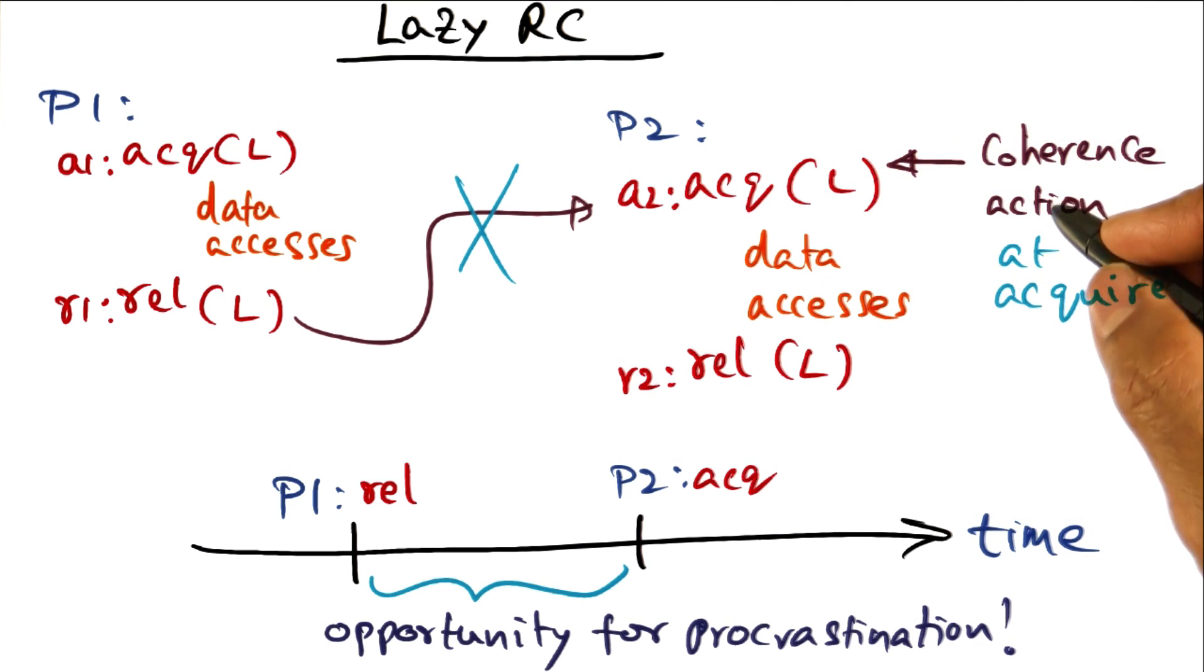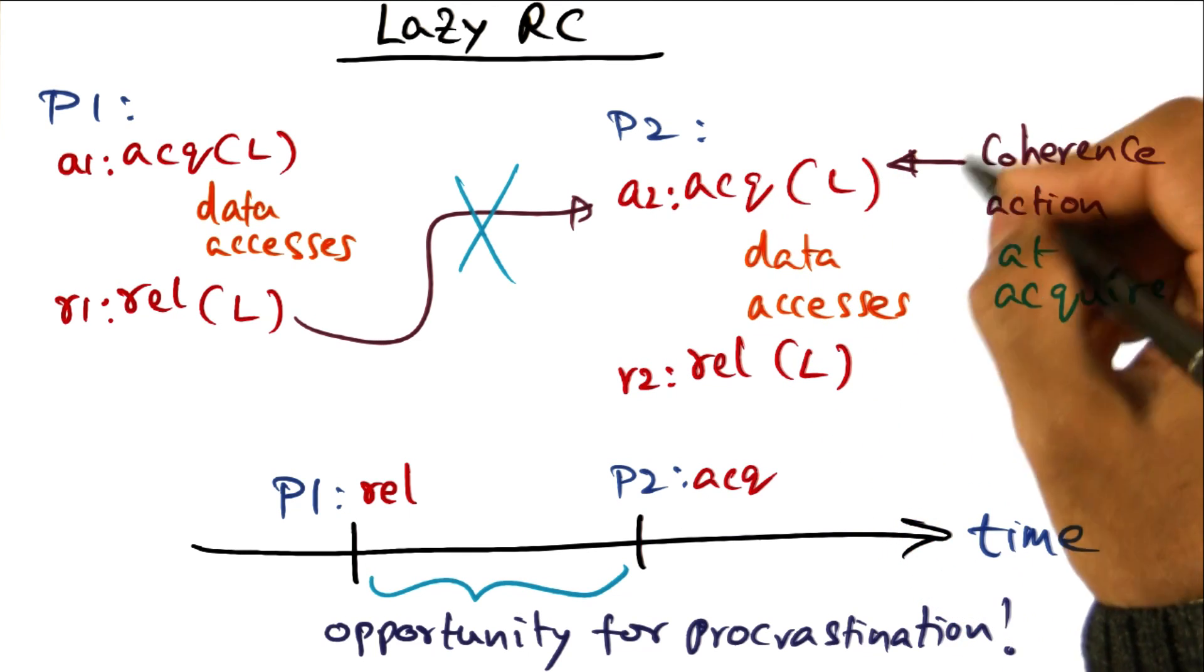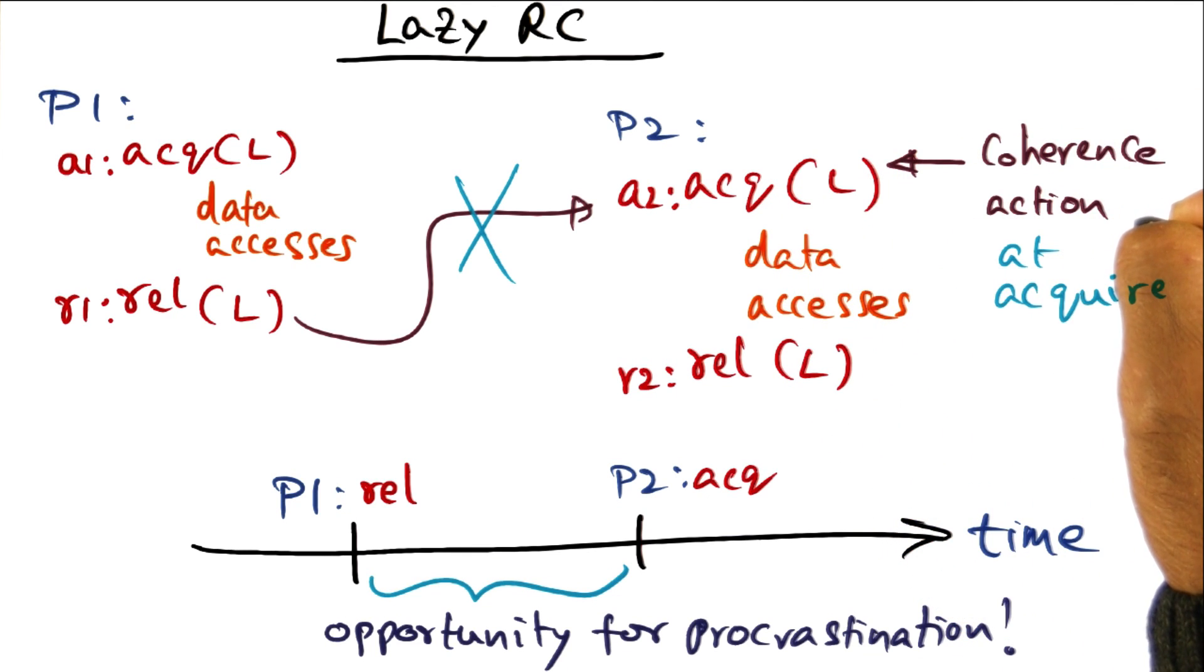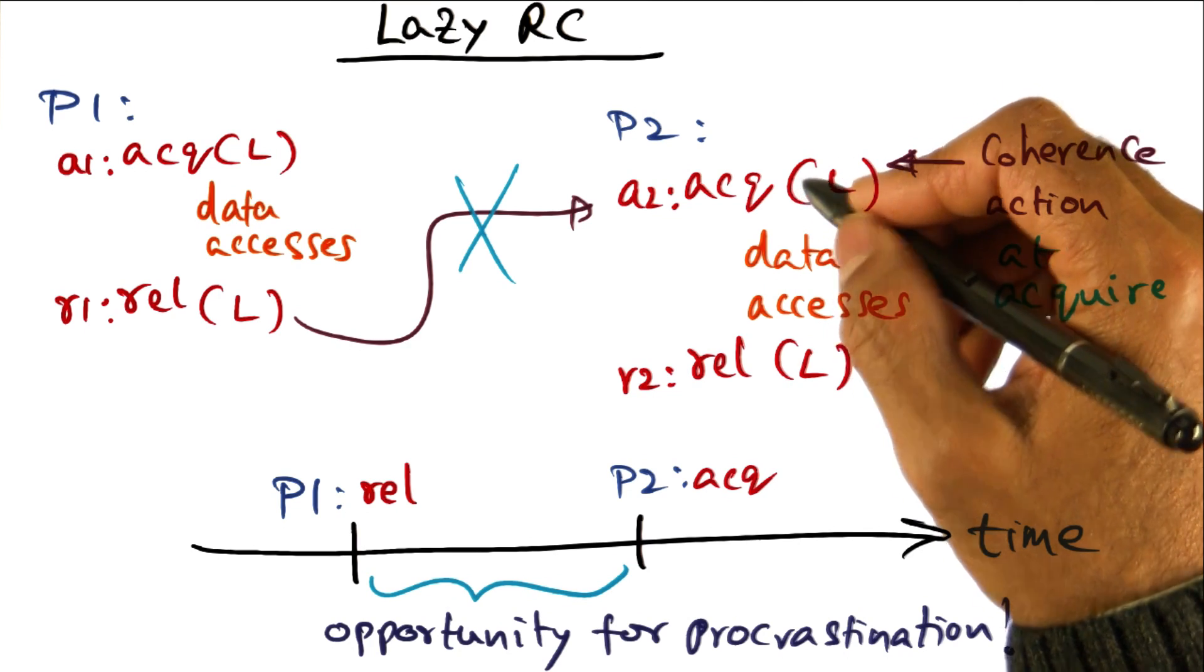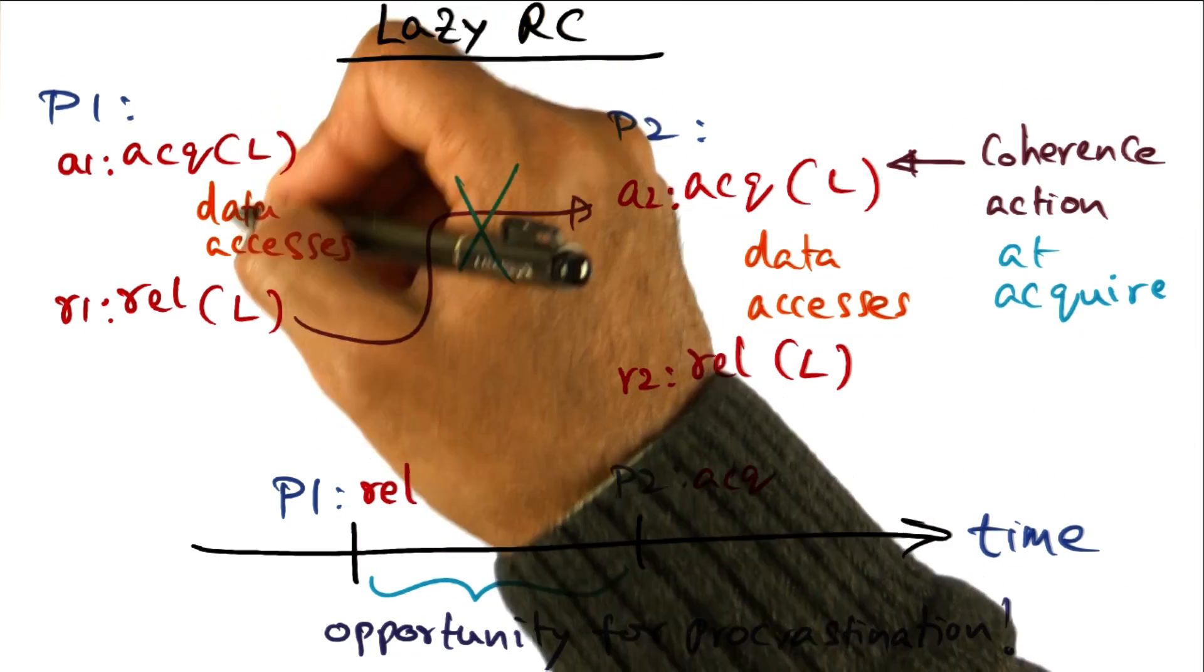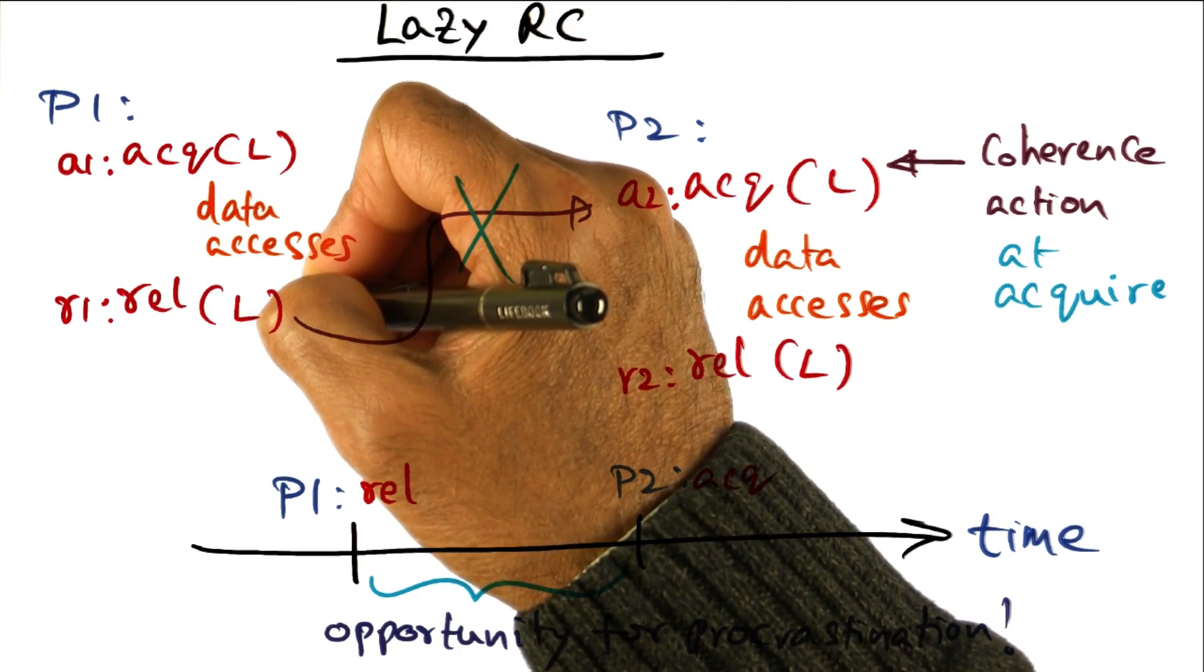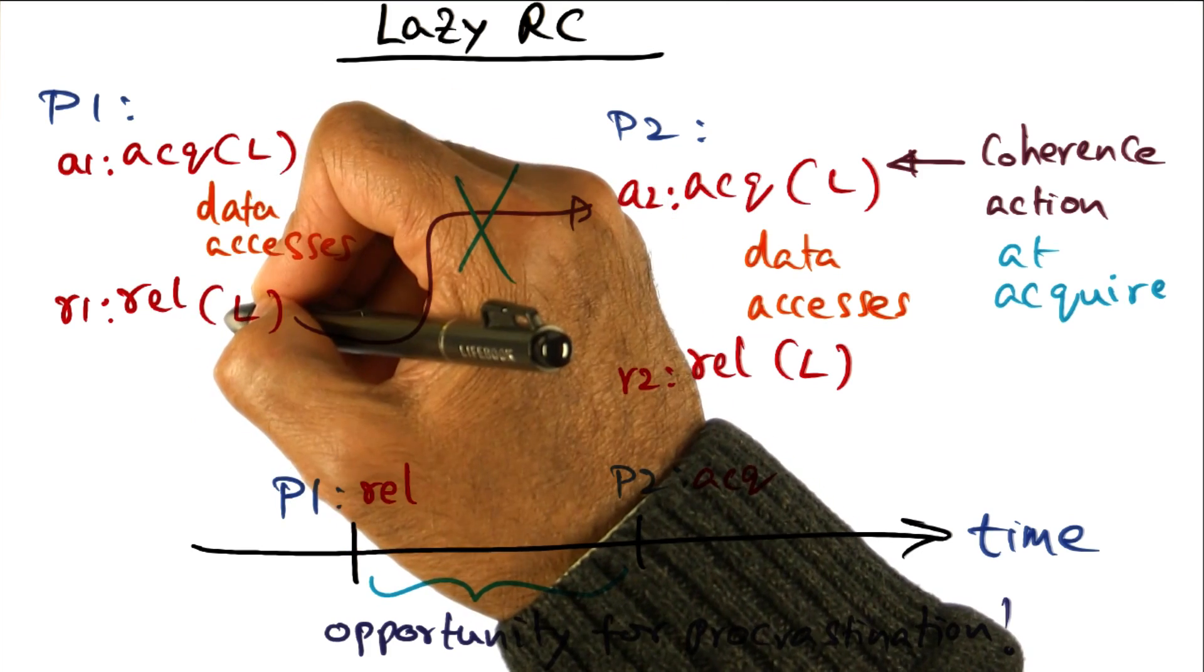The key point is that you're deferring the point at which you ensure that all the coherence actions are complete to the point of acquisition as opposed to the point of release. Even if all the coherence actions commensurate with the data accesses that have gone on up until this release point are not yet complete when we hit the release,